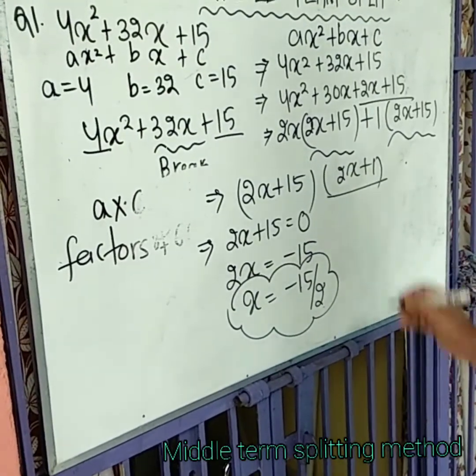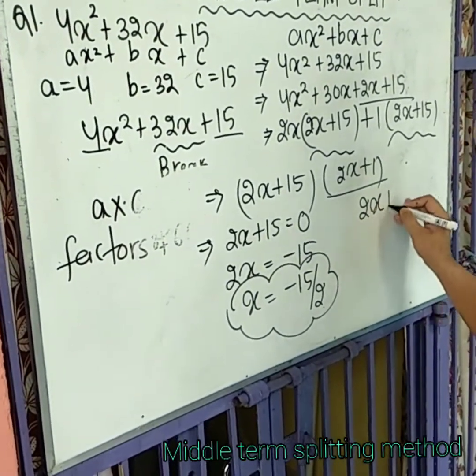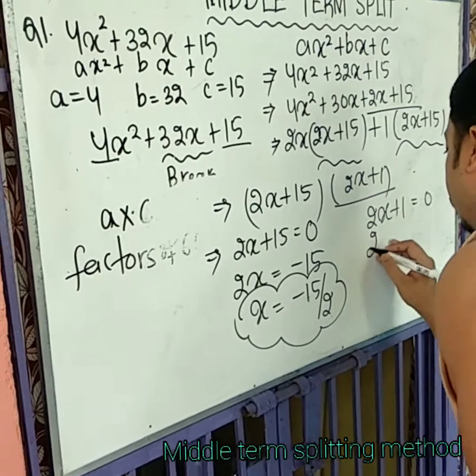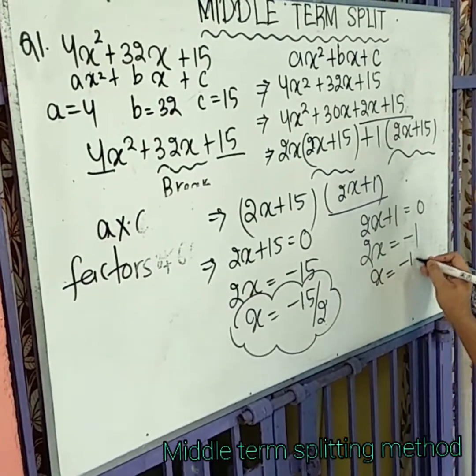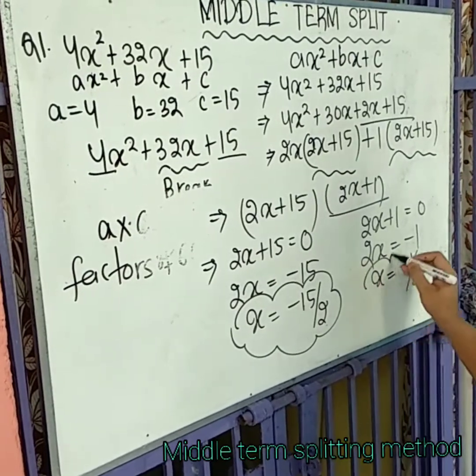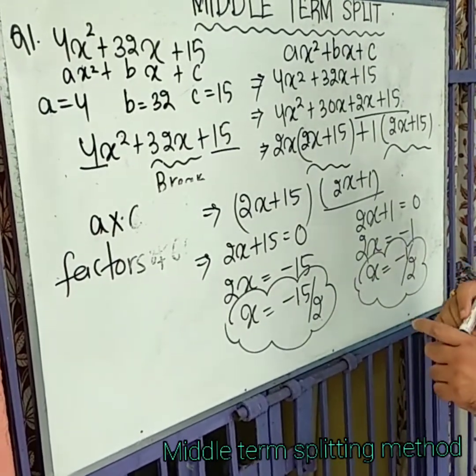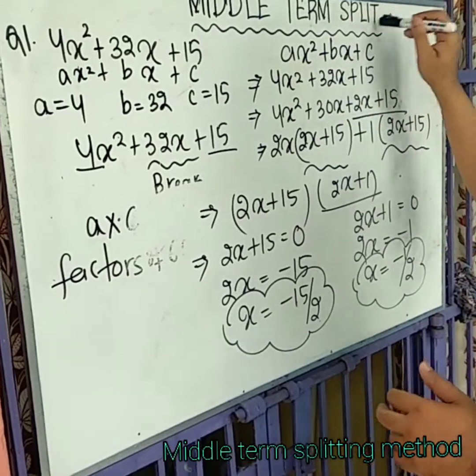The other one here, 2x plus 1 equal to 0, 2x equal to minus 1, and x equal to minus 1 upon 2. So, here is a zero, this is zero. So, this is all about middle term split. Clear?